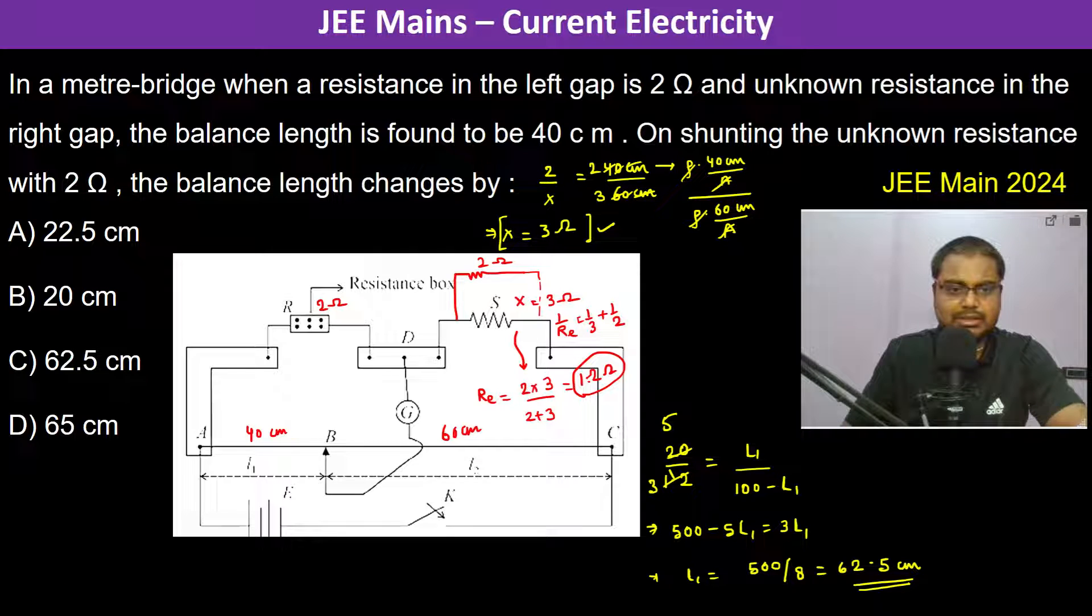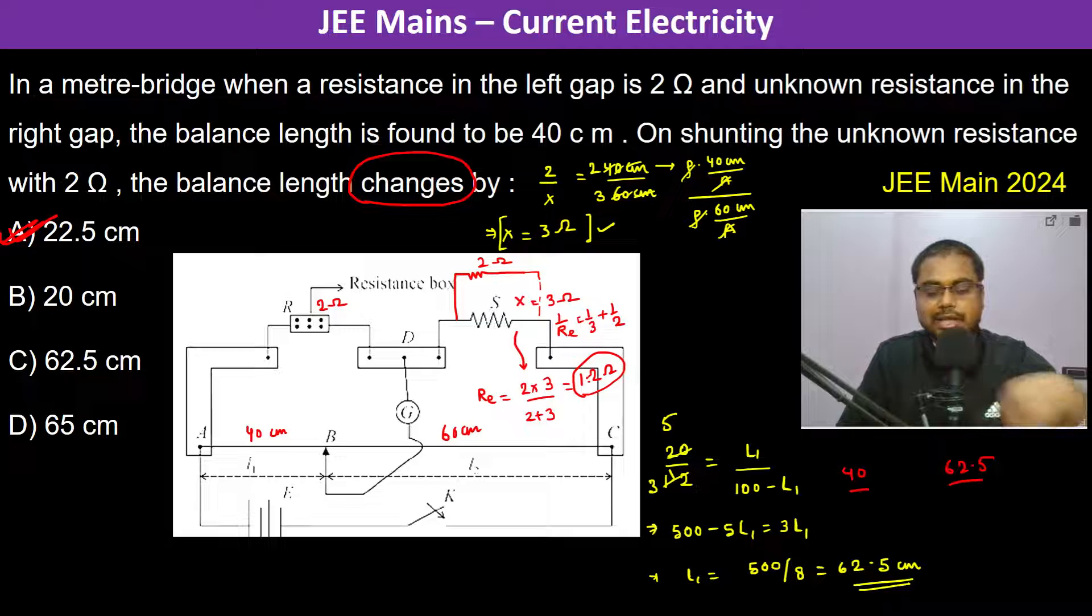Again, the question is the balance length changes by - so previously it was 40, now it is 62.5, so therefore changes by 22.5 centimeters. So therefore A is the answer. Thank you.